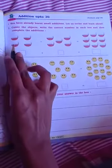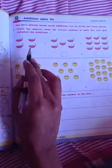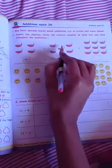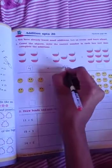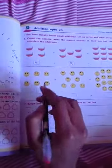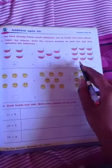1, 2, 3, 4. There are 4 diyas. So, we write here 4. 1, 2, 3, 4, 5. There are 5 diyas. So, we write here 5. So, 4 plus 5.